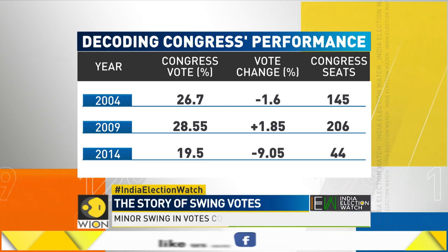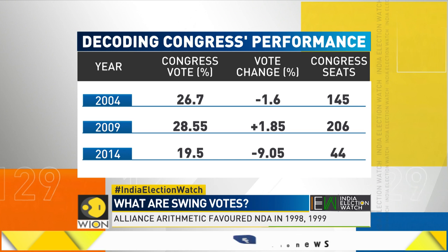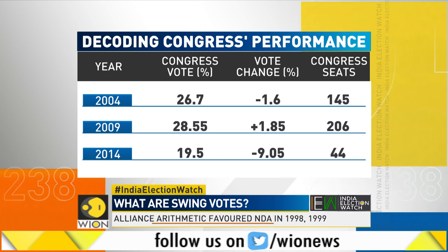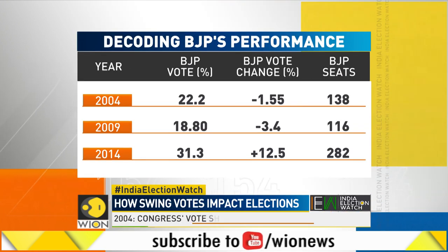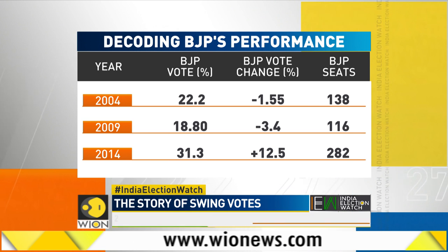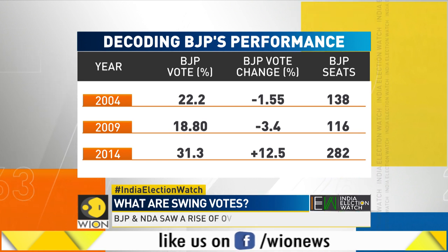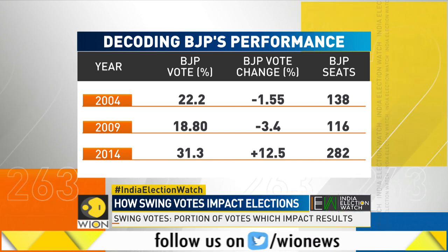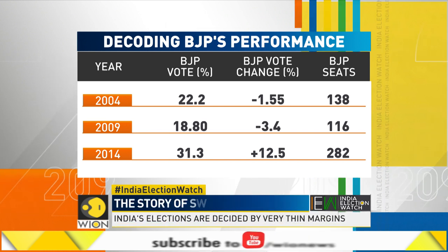In 2014, the scenario changed dramatically. The Congress Party lost 9% of its vote share, which translated to a fall of 162 seats, leaving an abysmal total of 44 seats. Compare this to the BJP: the party lost 1.5% of votes in 2004 and was reduced to 138 seats; in 2009, it lost a further 3.5% and could not form the government. But in 2014, a 12.5% increase in vote share helped it add 166 seats to the 116 it had in 2009 — and that was clearly the Modi wave.